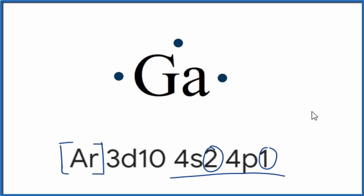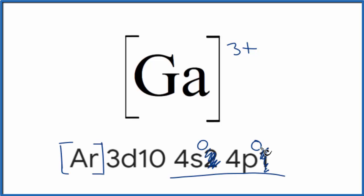If we had the ion, Ga3+, we'd lose these three here, and then we would write 4s0, 4p0. So this would be the electron configuration for the gallium ion, Ga3+.